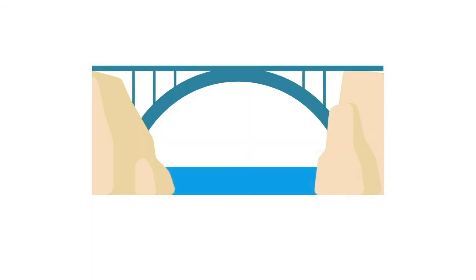Arch bridges consist of a support arch that increases the strength and stability of the bridge and allows it to withstand higher loads than beam bridges. This type of bridge is often built of stone or steel.